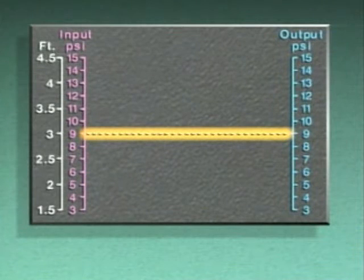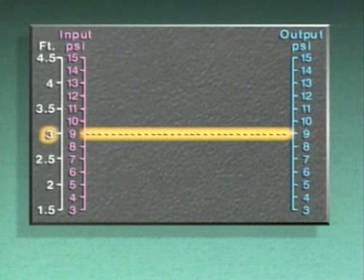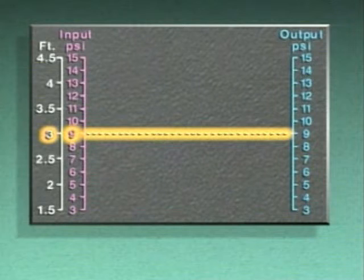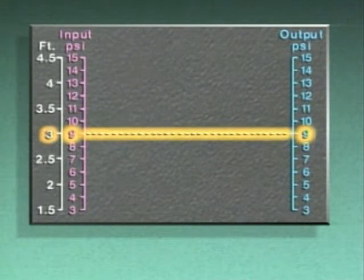The dashed horizontal line represents the set point for the water level. In this example, the set point is 3 feet, which is equivalent to a 9 PSI input signal to the controller, and a 9 PSI output signal from the controller.